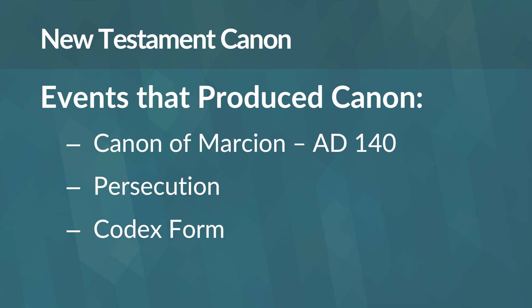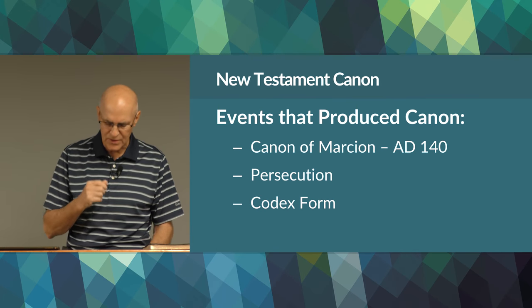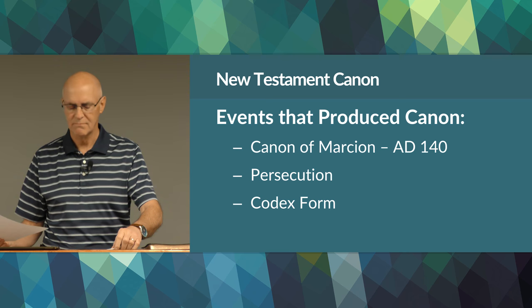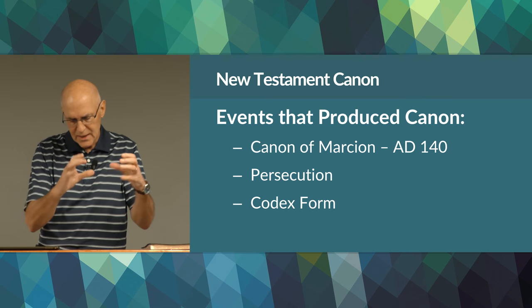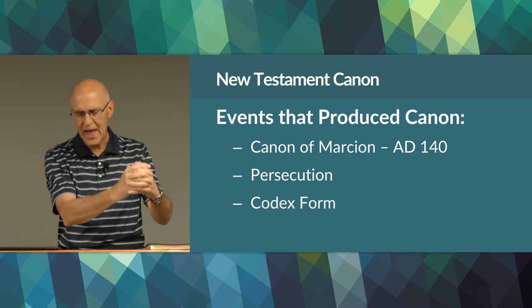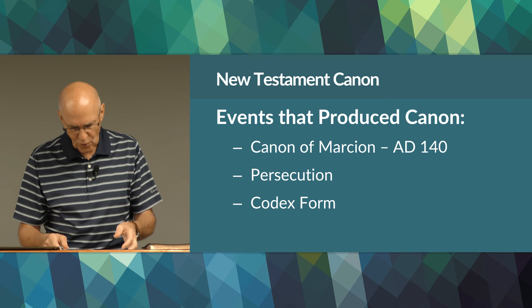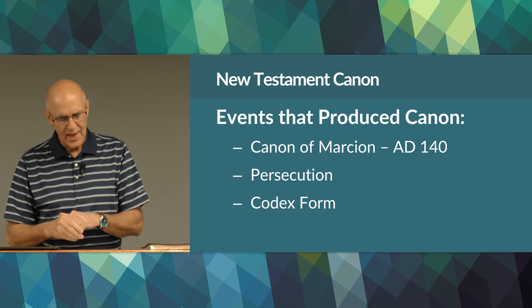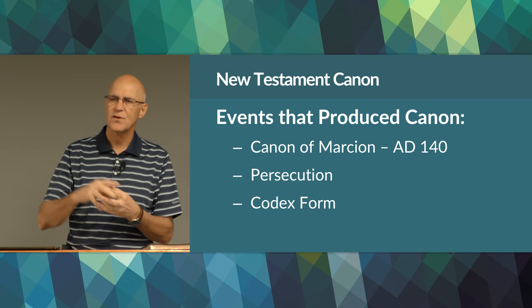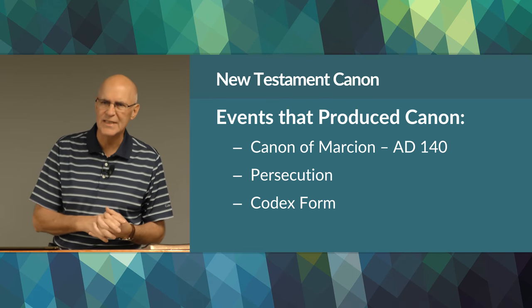The first event was the Canon of Marcion in 140 AD. Marcion was a false teacher who rejected the entire Old Testament, accepted only 10 of Paul's epistles and part of Luke's gospel, and began circulating his personal selection as the official canon. The early church was forced to decide which writings were authoritative, which to collect and which to circulate — and this process began to roll around 170 AD.